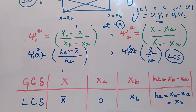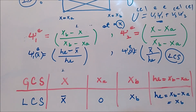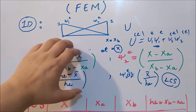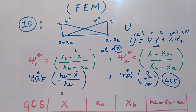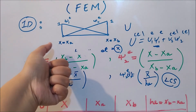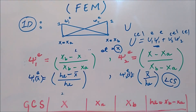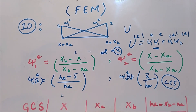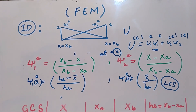It is important to understand the difference between local and global node numbering and coordinate systems, as we will use these in upcoming methods. In the next video we will derive the shape function for a quadratic element to see what changes when moving beyond the linear element. Thank you for watching — subscribe for more upcoming videos, and take care.